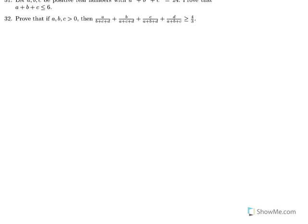Exercise 32: Prove that if a, b, c, d are positive real numbers, then a over (b+c+d) plus b over (a+c+d) plus c over (a+b+d) plus d over (a+b+c) is greater than or equal to 4/3.